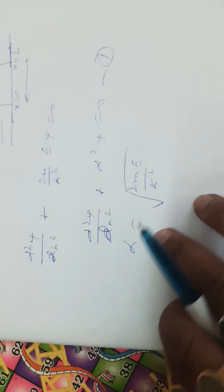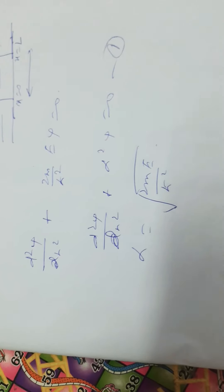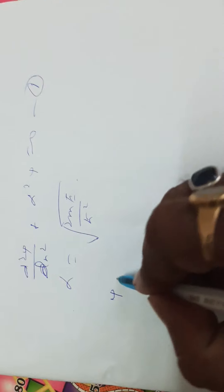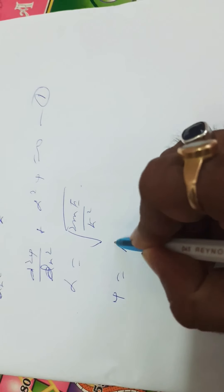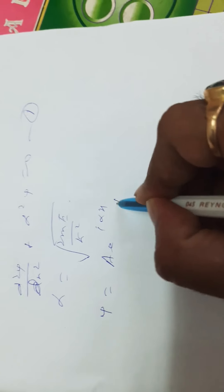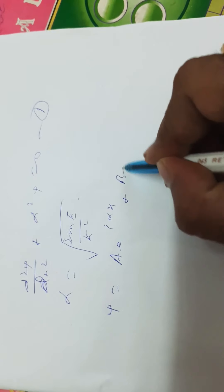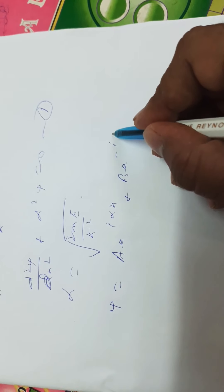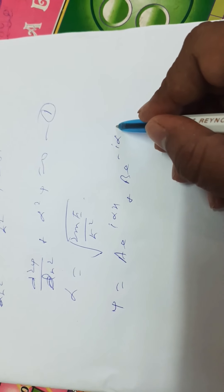We rewrite this as d²ψ/dx² plus α²ψ equal to 0 — equation (1) — where α is defined as √(2mE)/ℏ. The general solution for this equation can be written as ψ equal to A·e^(iαx) plus B·e^(−iαx).